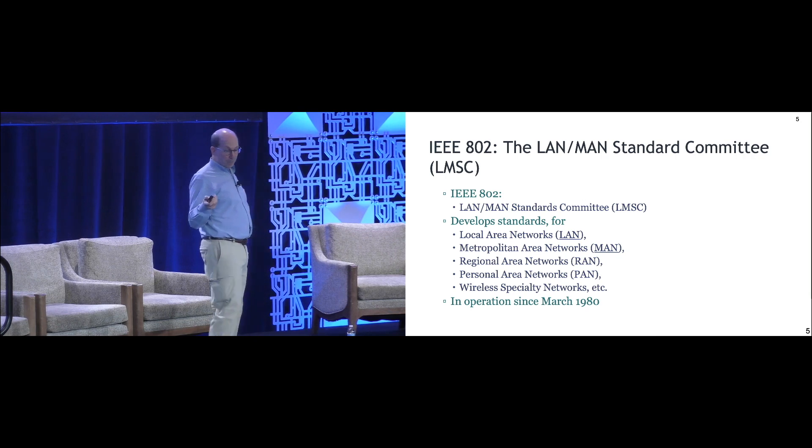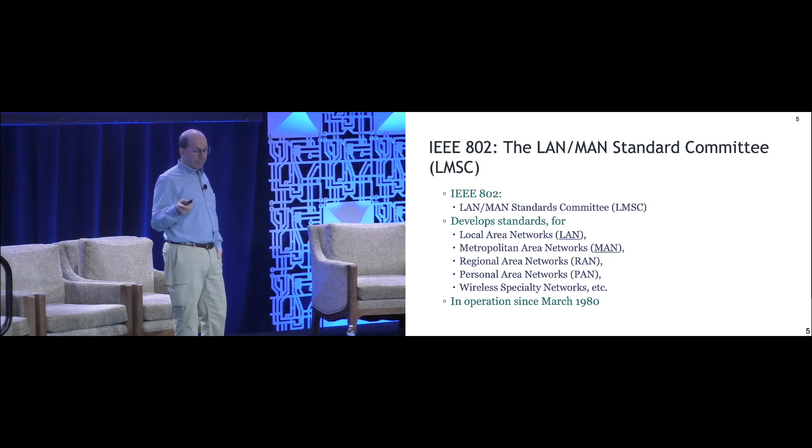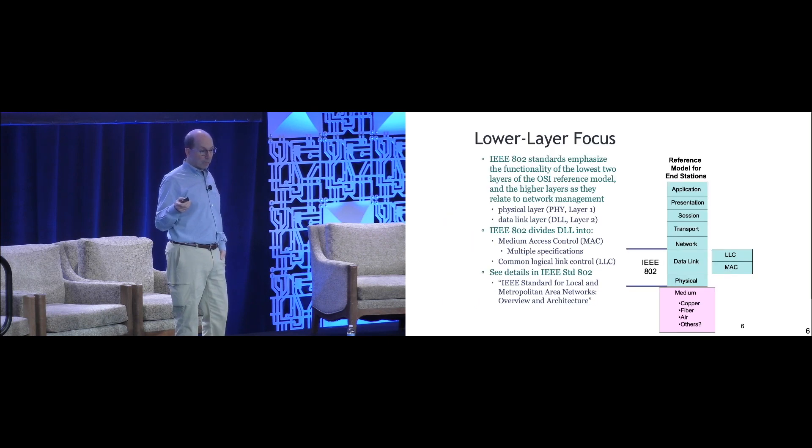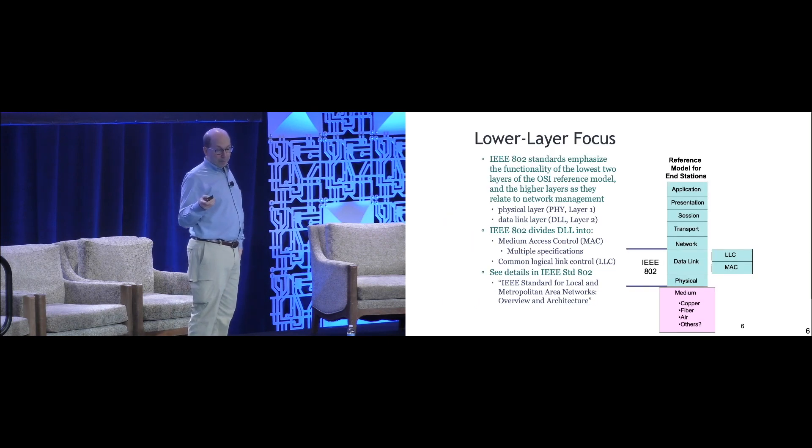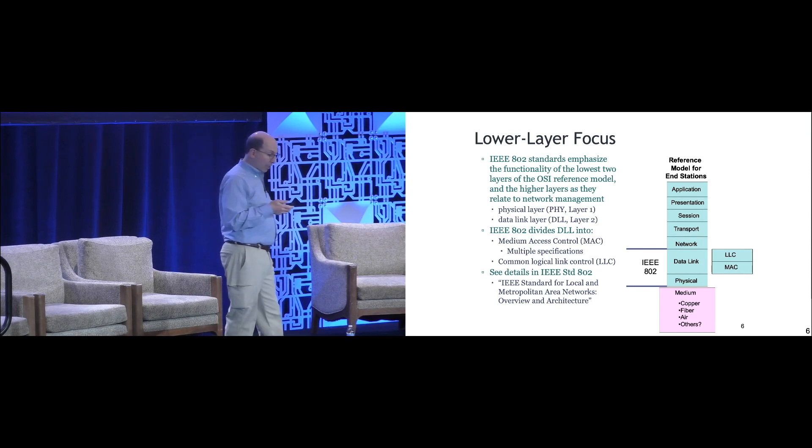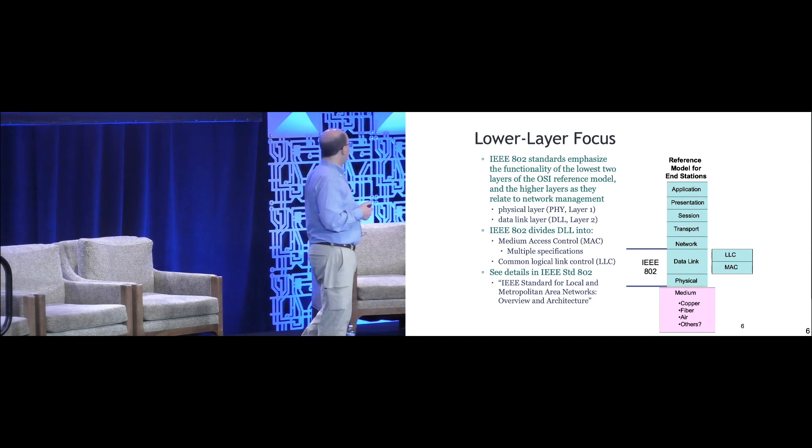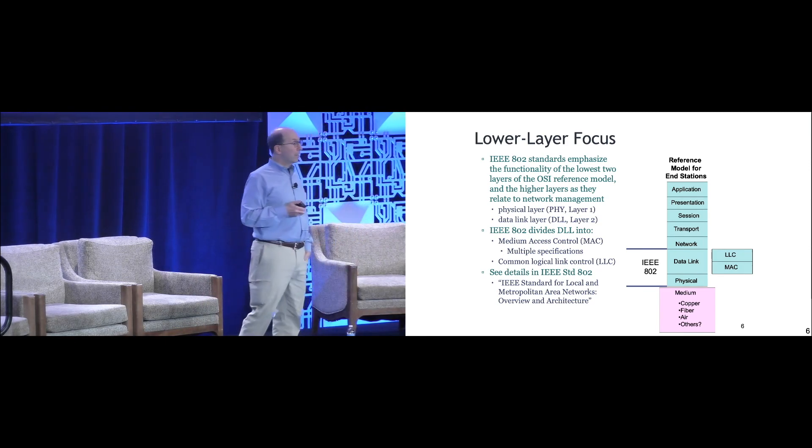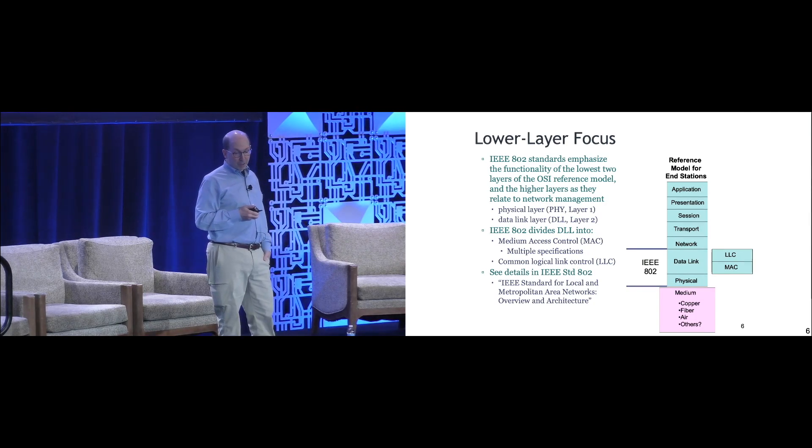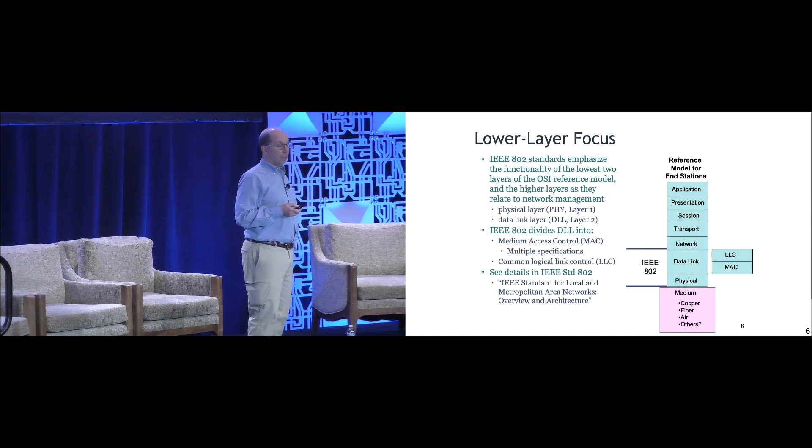I've been active on the executive committee since 1998, so that's more than half of the time that the standards committee has been around. In 802, the focus is on the lower two layers of the network, the physical layer and the data link, which is essentially the MAC layer. You can find out more about that in a standard called IEEE Standard 802.